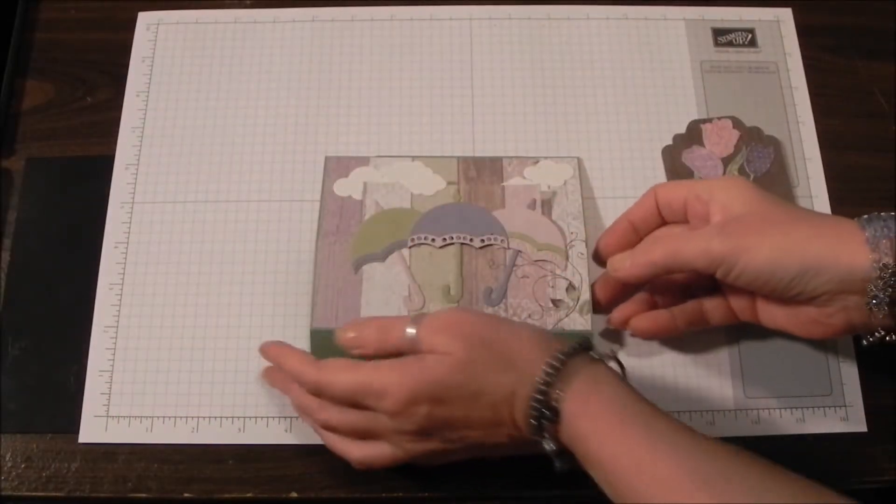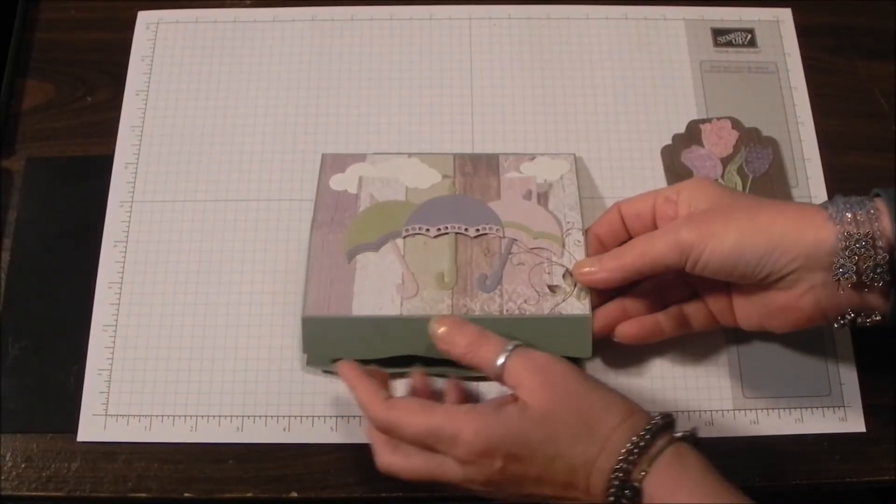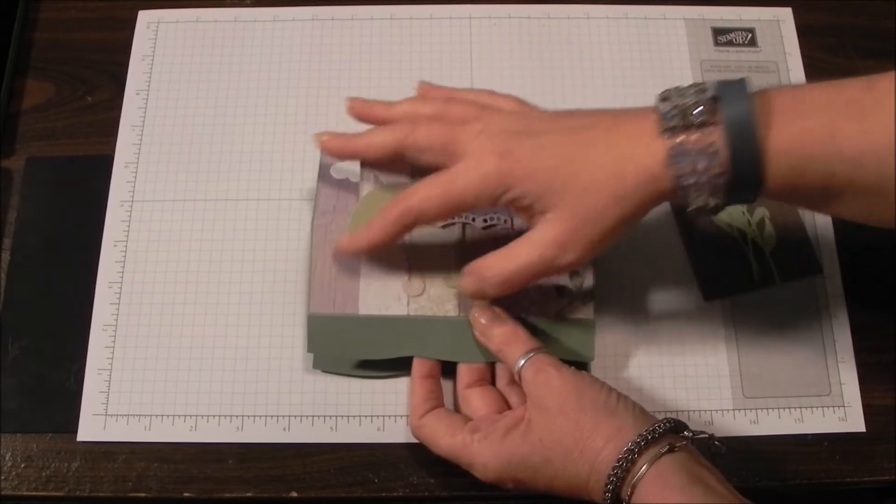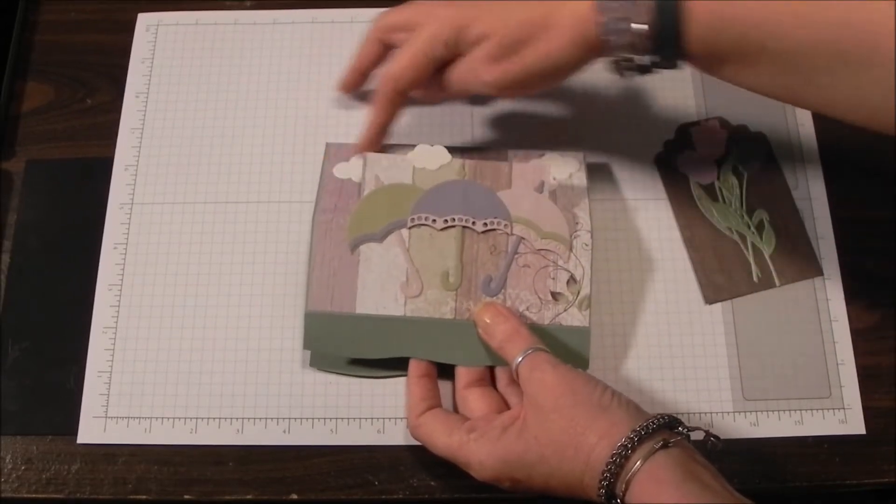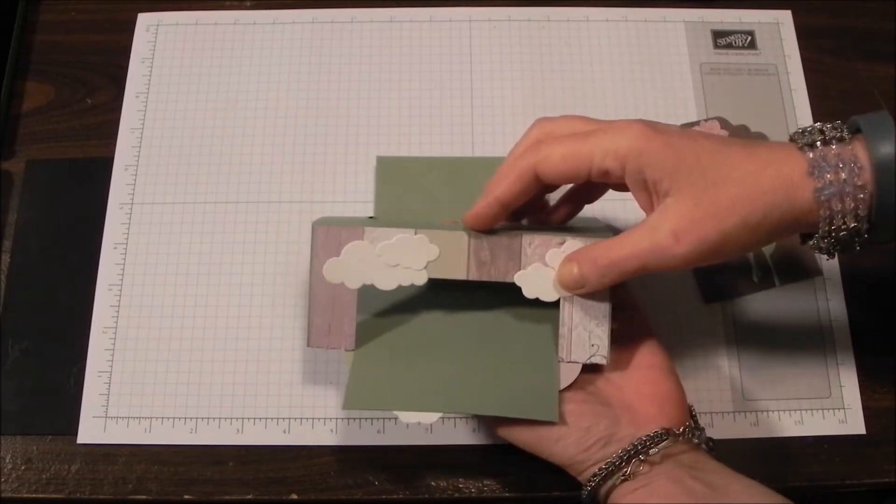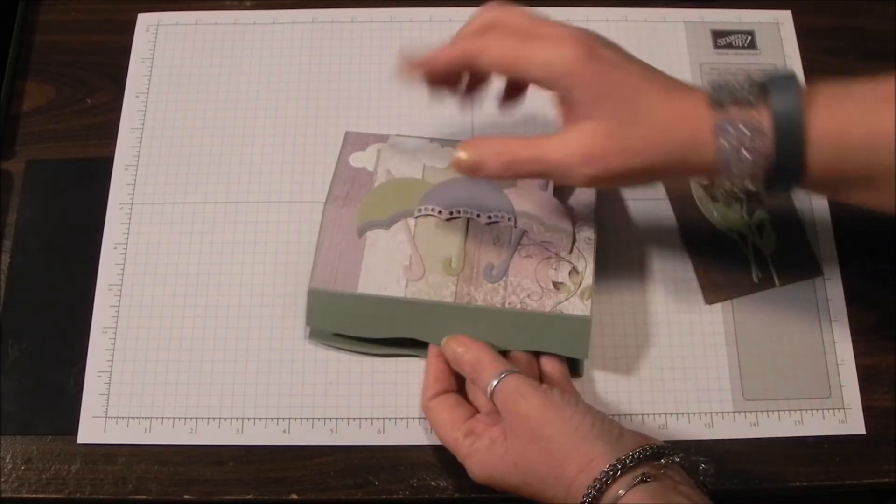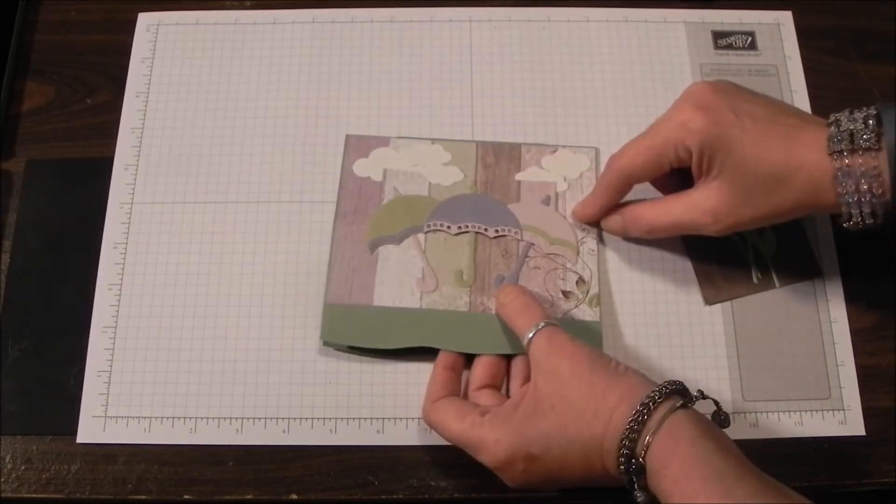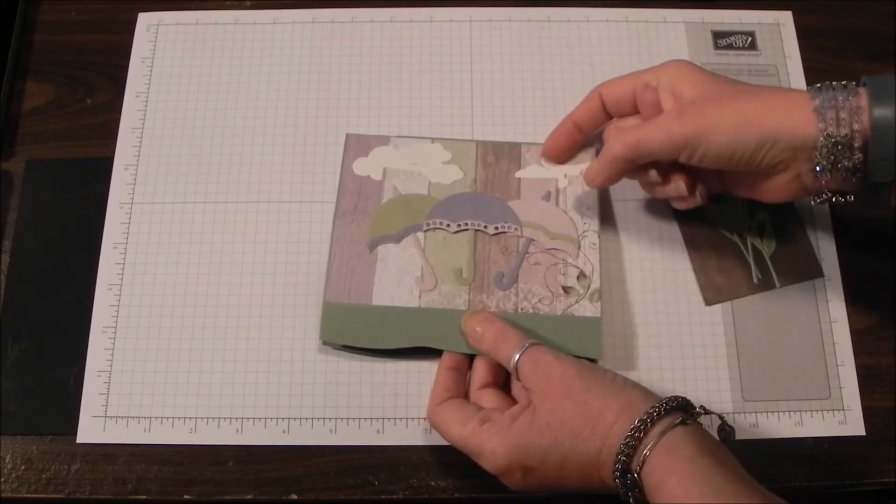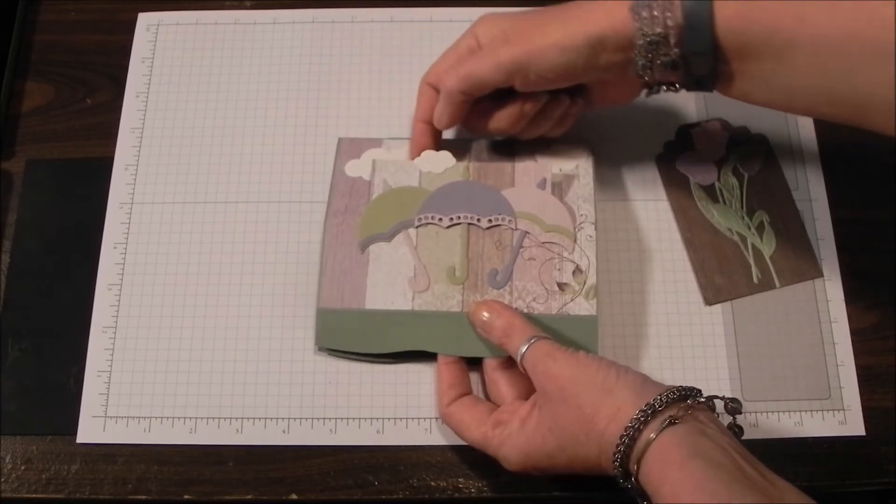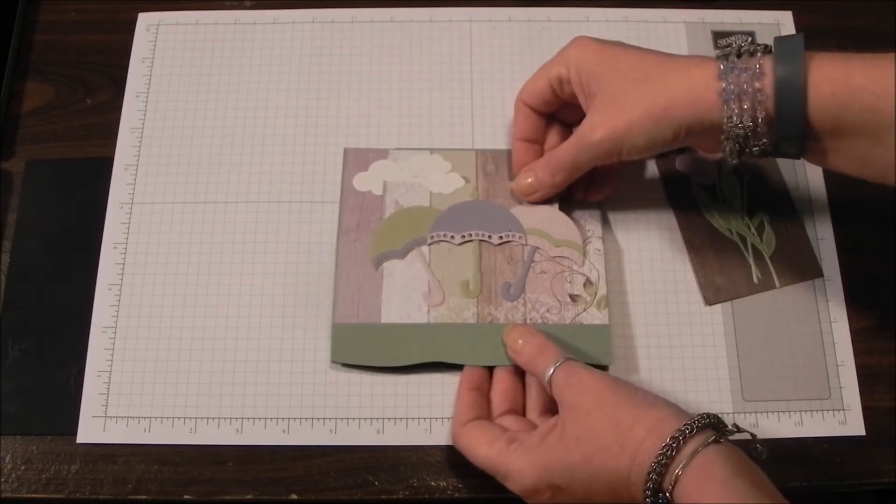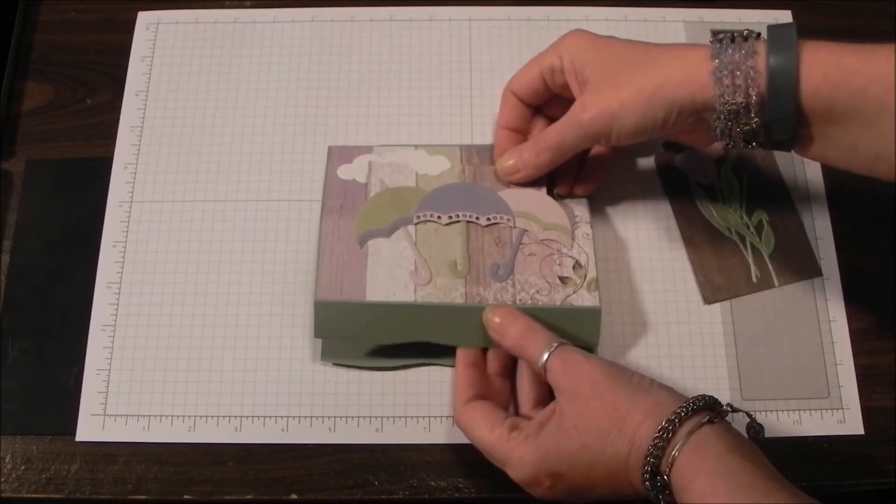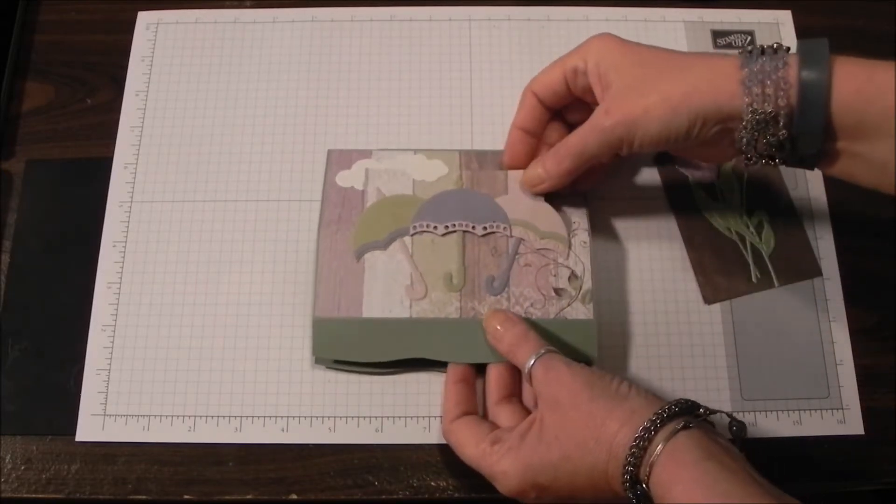I went ahead and attached my embellishments. In this case, they're all die cuts. There's the pull down, which is all going to disappear when the card is opened, and then there's the frame, which is going to show when the card is displayed. You can extend beyond each of these two areas. You just don't want to attach things to both the frame and the pull down. You want to make it pretty obvious that this needs to somehow open.